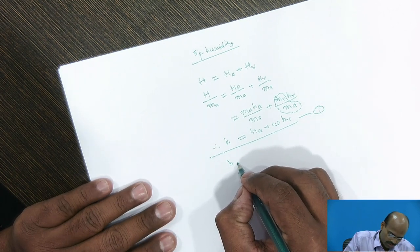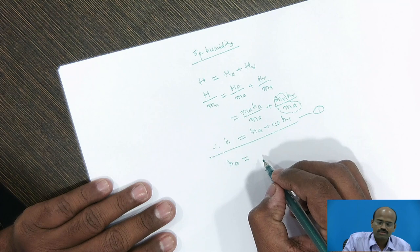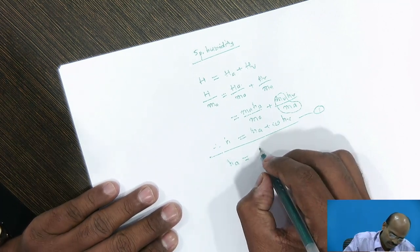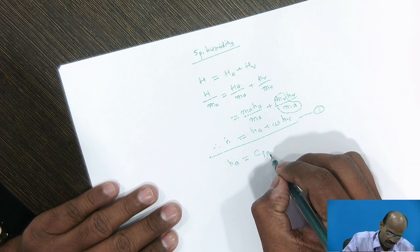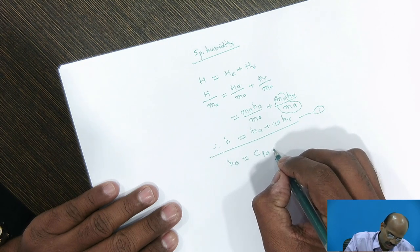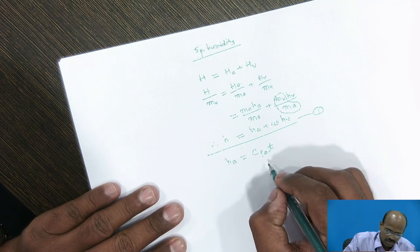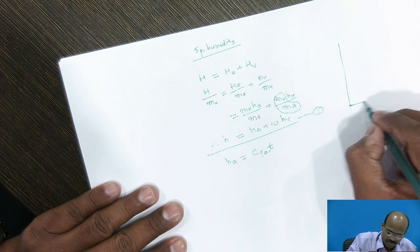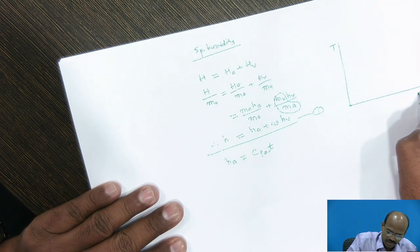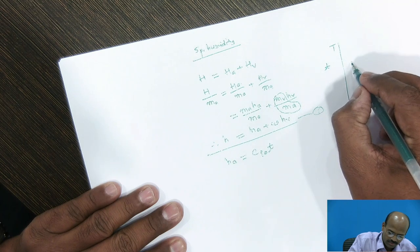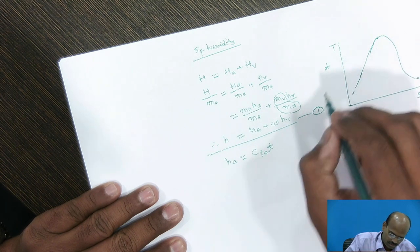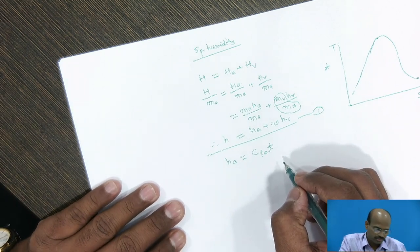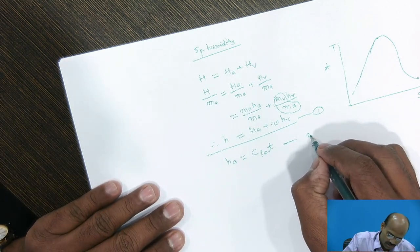As we know, specific enthalpy of dry air, as the air is in the gaseous phase, we can consider CpA, means specific heat, specific heat of air into dry bulb temperature. Now, this dry bulb temperature is nothing but small t, which is the same of air and water vapor. This is the equation number second.